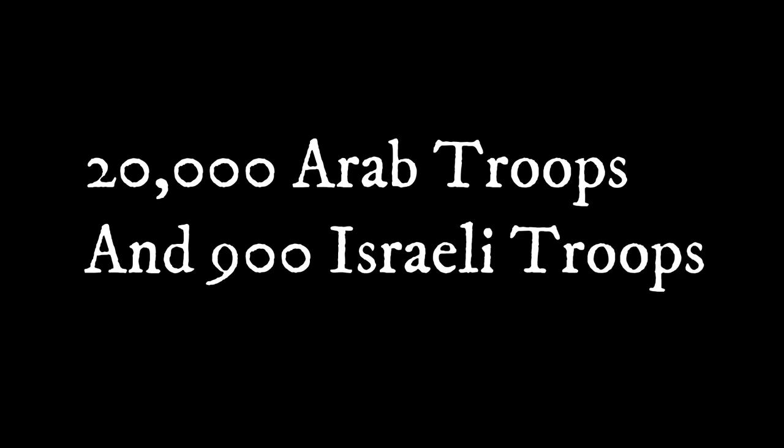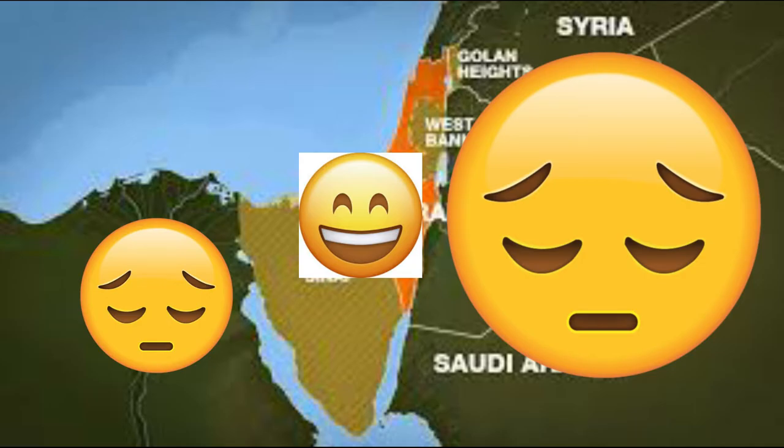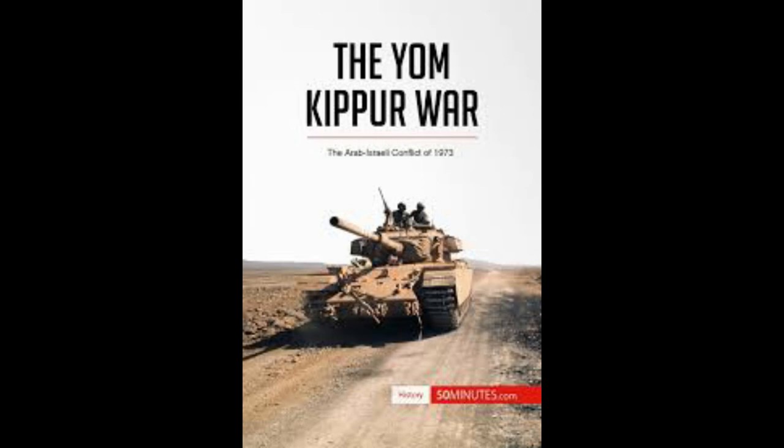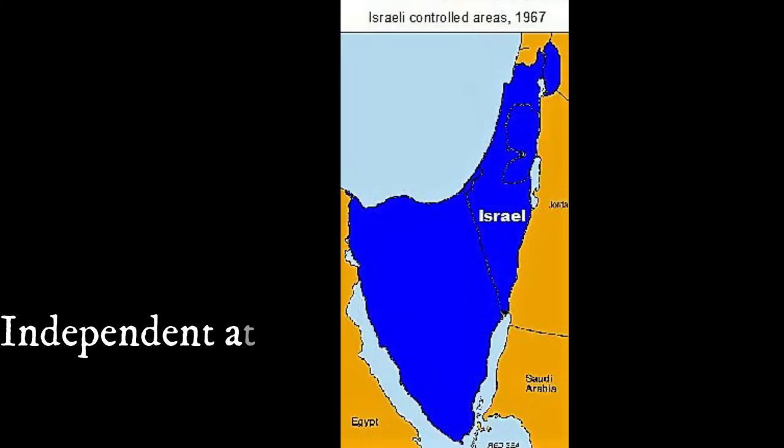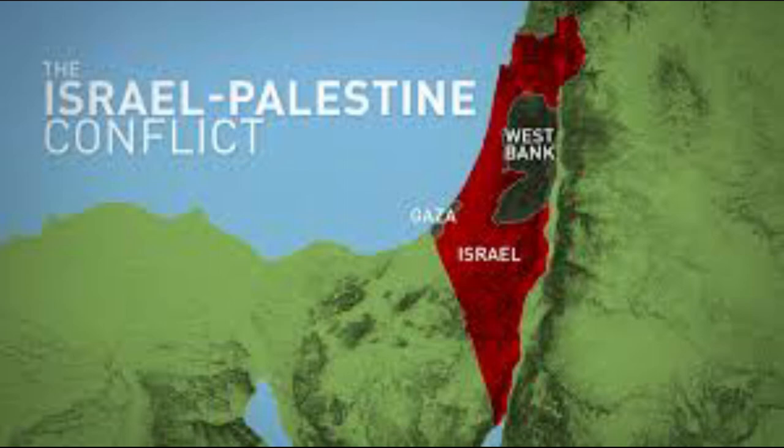The Six-Day War had many consequences. In total, 20,000 Arab and 900 Israeli troops died. The Arab nations were shocked by their second loss and sought revenge, which led to the Yom Kippur War. The Israelis were proud and reinvigorated by the victory. While Israel's independence was again confirmed, the war continued to fuel Arab and Israeli hostilities and the Palestinian conflict.